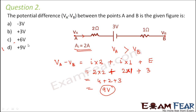Therefore the potential difference between A and B is 9 volts. Since current flows from A to B, there are potential drops across the 2-ohm and 1-ohm resistances, plus the cell EMF — all of which must be summed. This is also consistent with Kirchhoff's law, which states the net potential equals the product of currents and their respective resistances.